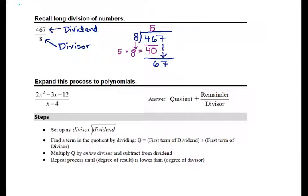Then we repeat this process. So, again, starting over from the beginning, how many times does 8 go into 67? We would say that goes in 8 times,